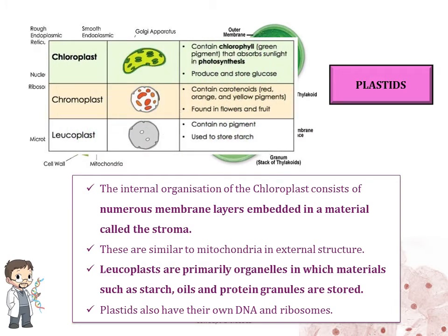Chloroplasts contain chlorophyll, a green pigment — they absorb sunlight, help in photosynthesis, and produce and store glucose. Chromoplasts contain colored pigments like carotenoids — red, orange, and yellow pigments — and are found in flowers and fruit. Leucoplasts contain no pigment, are colorless, and are used to store starch, oils, and protein granules. Plastids also have their own DNA and ribosomes, just like mitochondria.